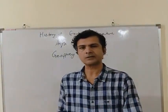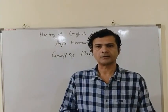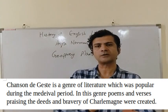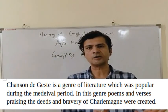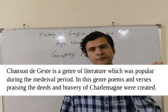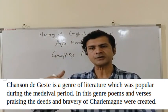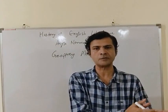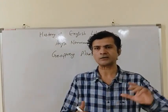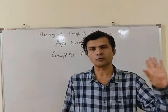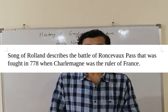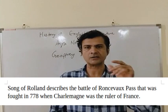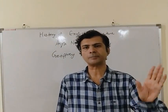Apart from these four poets and their works, some more poems were very popular during the Anglo-Norman period. The first genre was Chanson de Geste. One of the very famous poems of this genre was the Song of Roland. All poems belonging to the Chanson de Geste genre are the matter of France, and these poems were written to praise the bravery of Charlemagne, who ruled France during the 8th century. They were written in Norman or Old French. The Song of Roland discusses the Battle of Roncevaux Pass, which was fought in 778 when Charlemagne was the ruler of France.